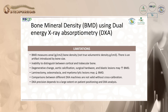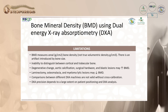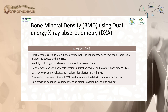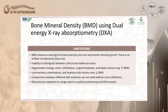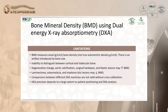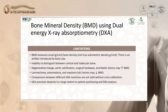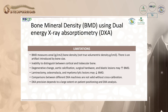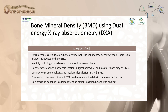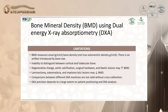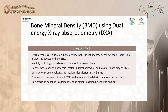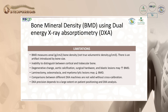DEXA limitations include that it measures area density in grams per centimeter squared, not true volumetric density in centimeters cubed, and there is artifact induced by bone size. Degenerative changes, aortic calcification, surgical hardware, and plastic lesions may increase BMD, while laminectomy, osteomalacia, and multiple myeloma may decrease it. Comparison between different DEXA machines is not valid without cross-calibration, so it is best to repeat scans on the same machine. DEXA precision also depends largely on patient positioning and analysis.